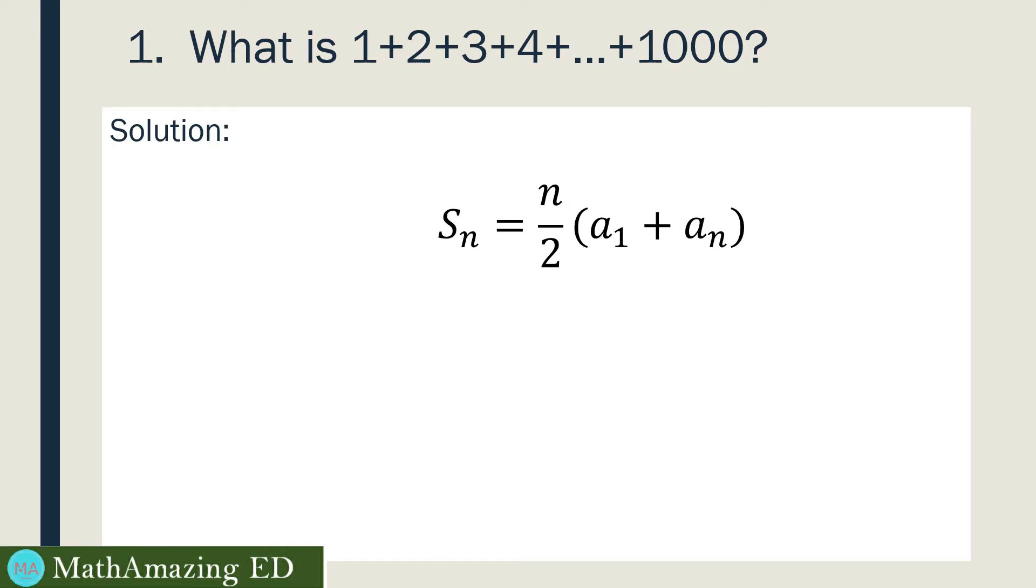The given values here are three. We are going to get n first, so our n, or how many numbers are we going to add, that would be 1,000 numbers. Next, our first term is just 1, and then our nth term, or the last term, is 1,000. So next would be the substitution process. We have S sub 1,000 equals 1,000 divided by 2 times the first term, which is 1, plus the nth term, which is 1,000.